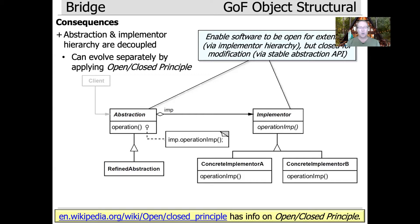The idea behind the open-closed principle is you want to keep the interface closed — you want to rely on the interface being fixed — but you want to be able to extend the behavior of the class. You define a fixed interface but allow implementation to vary through inheritance and dynamic binding. The bridge pattern is a canonical way of doing this: you have an abstraction with a fixed API, but you can refine it by inheriting from it, and you can also inherit from the implementer hierarchy, refining it in two dimensions while keeping the API the same.